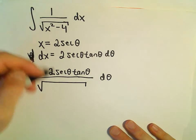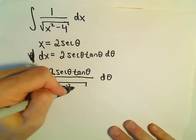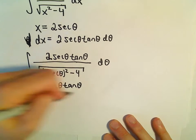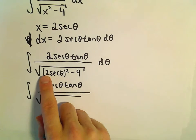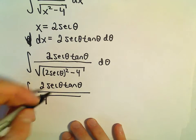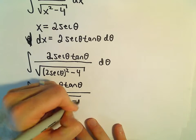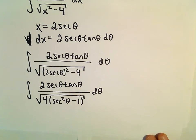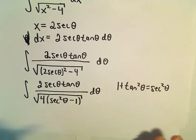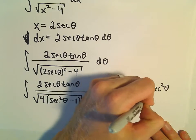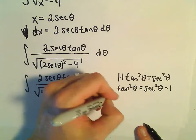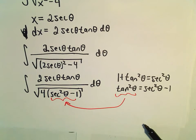In the denominator, we have the square root of 2 secant theta squared minus 4. Underneath the radical, we have 4 secant squared theta minus 4. We can factor out the 4, leaving secant squared theta minus 1. Recall that 1 plus tangent squared theta equals secant squared theta, so tangent squared theta equals secant squared theta minus 1. We'll substitute tangent squared theta in for secant squared theta minus 1.